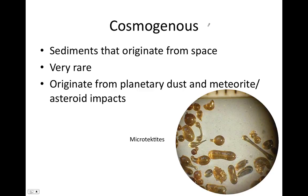The fourth type is cosmogenous sediment — sediments that originate from space. They're very rare. Whenever fragments from outer space enter Earth's atmosphere, friction causes heat, which melts the material; as it resolidifies it takes the shape of a sphere or ellipsoid, and we call these tektites. Most cosmogenous sediment found are tiny tektites called microtektites. This is the most rare type of sediment found in the ocean.